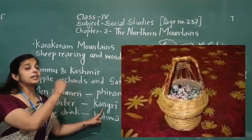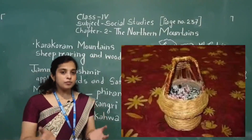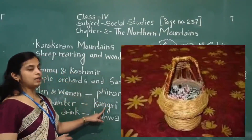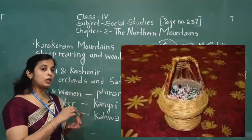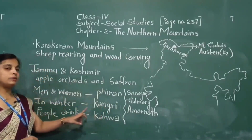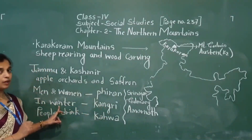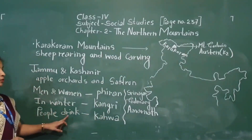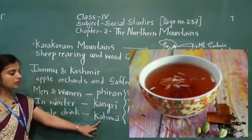Kangri is an earthen pot made of mud, containing burning coals. Kangri keeps them warm in winter. The people of Jammu and Kashmir also drink a special type of tea known as kahwa.